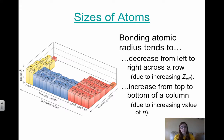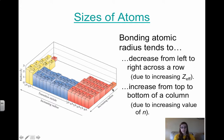On your periodic table — or draw an outline of one — label every periodic trend as we work through it, so at the end you'll have every periodic trend labeled. To start, the radius increases from top to bottom and it increases from right to left, meaning it decreases left to right.